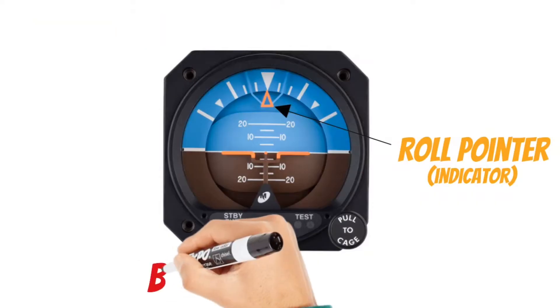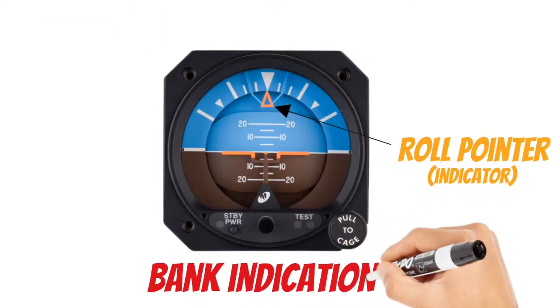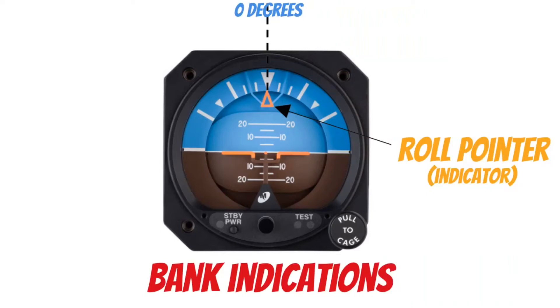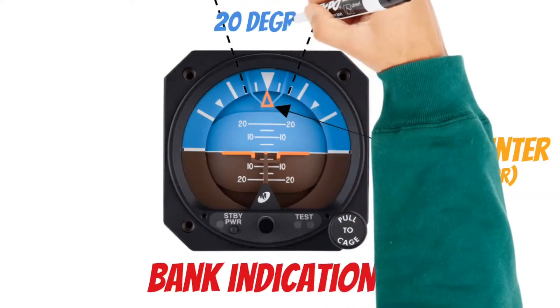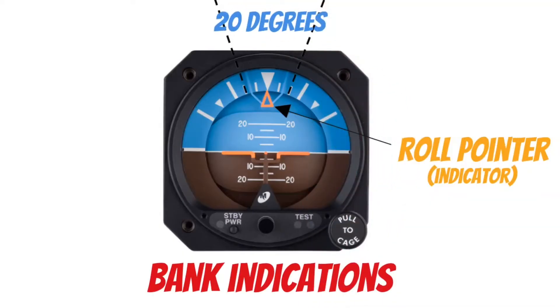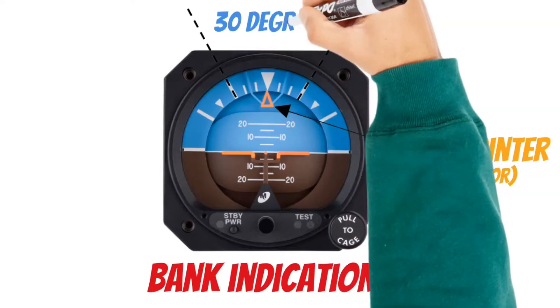When the roll pointer is centered on the bank index, the aircraft's bank angle is zero degrees. The first tick mark in both directions represents 10 degrees of bank. The second tick mark in both directions represents 20. The third tick mark in both directions represents 30 degrees of bank.